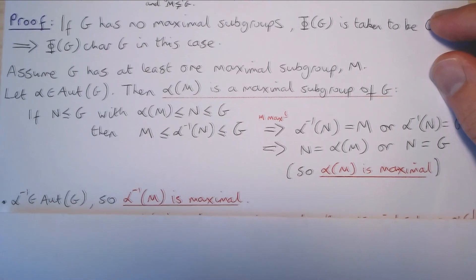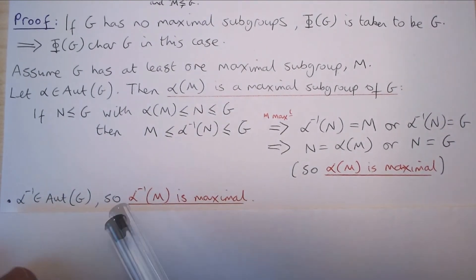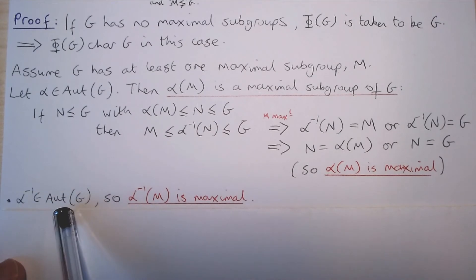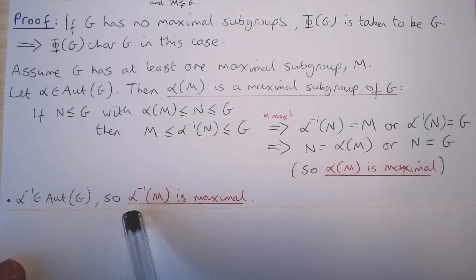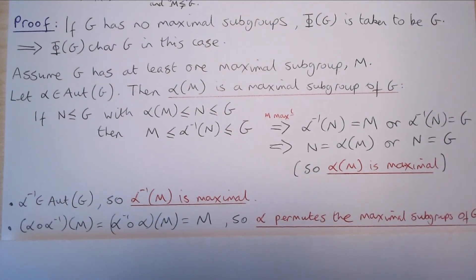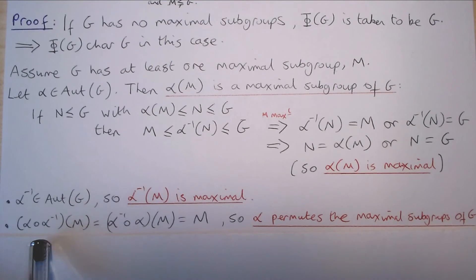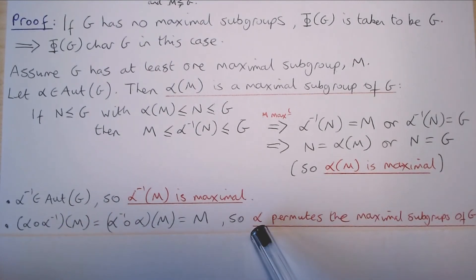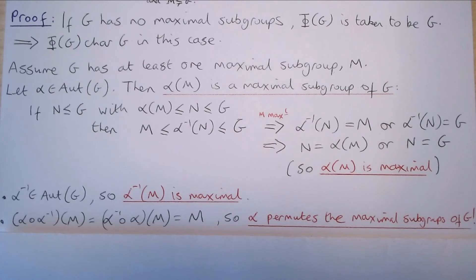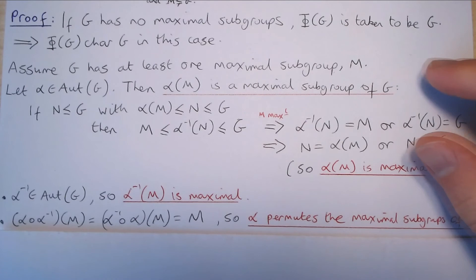Now note that because α was an arbitrary automorphism of G, α⁻¹ is also an automorphism of G. So we have that α⁻¹(M) is also a maximal subgroup of G. What this says is that composing α with its inverse, and α⁻¹ with α applied to M, gives back M. In other words, α is actually permuting the maximal subgroups of G. We use this fact to conclude that the Frattini subgroup of G is a characteristic subgroup of G.